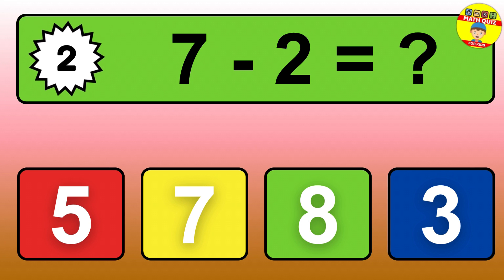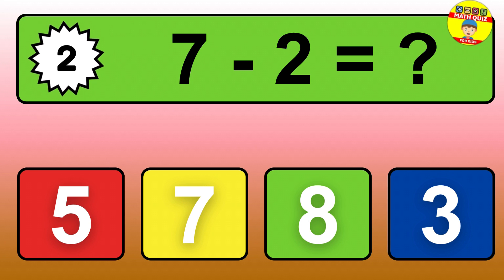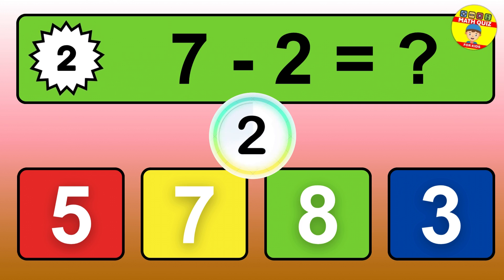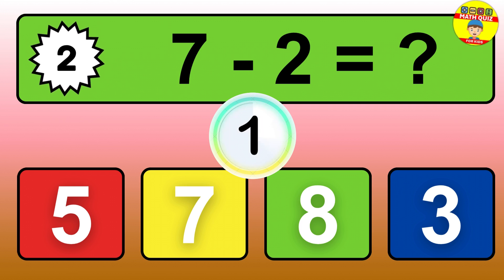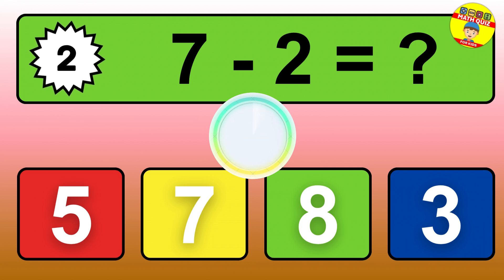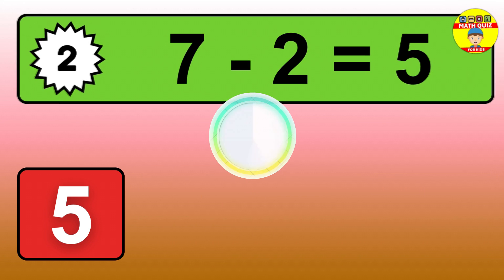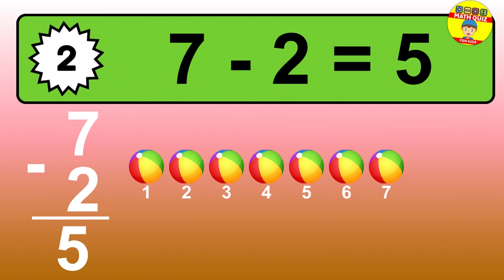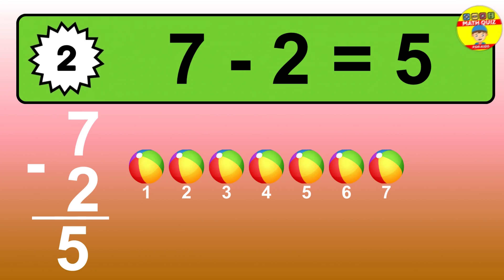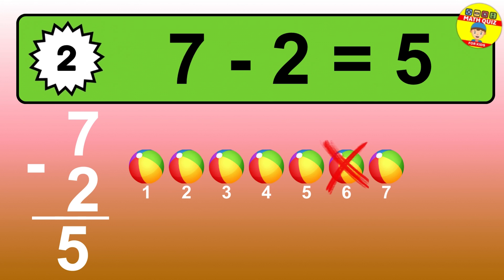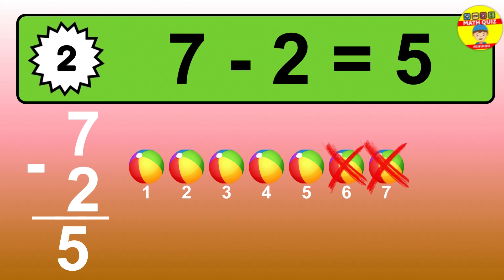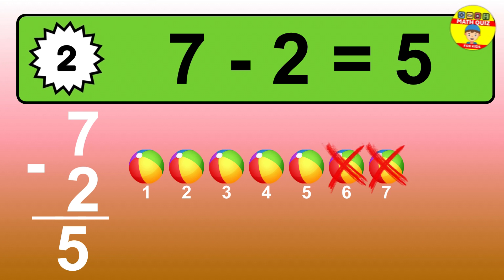Question two: seven minus two equals what? So the answer is, seven minus two is five. Let's count it. One, two, three, four, five.